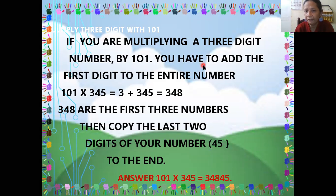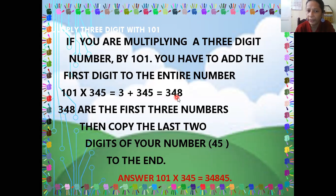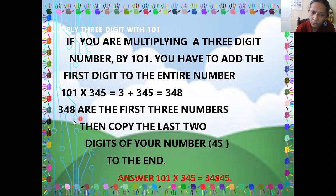You have to add the first digit to the entire number. The entire number here is 345. So if you add 3 with 345, you will get 348. Now the number is changed — 348. Now these are the first three digits of the answer.